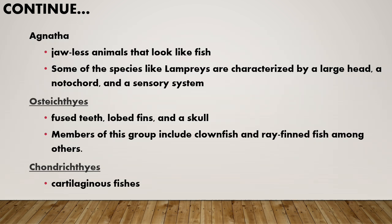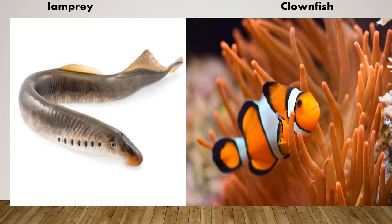Some vertebrates are jawless animals that look like fish. Some organisms have fused teeth and have skulls — for example, ray fish. You can see here in the diagram the types of fishes.